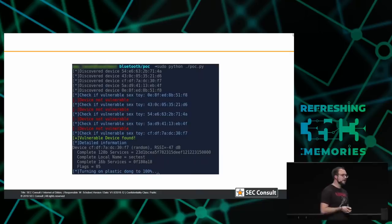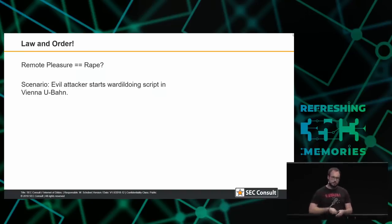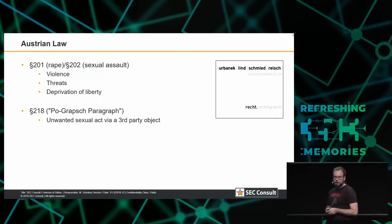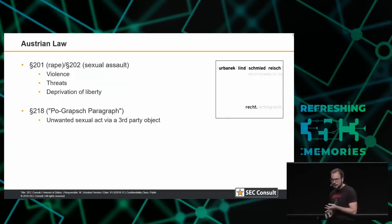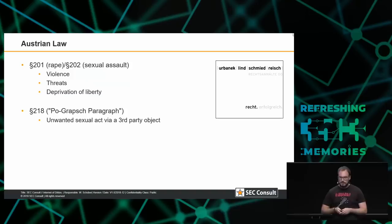The next thing I want to talk about is not that funny. When we released this, a lot of people on Twitter asked: is this rape? It's a serious topic. For example, an attacker using my war-dildering script in the metro in Vienna would pleasure random strangers — is that rape? In Austria we have rape and sexual assault, both requiring preconditions: violence, threat, or deprivation of liberty, which is not the case here. But there is a special paragraph called the Pograbsparagraph — verified with a legal expert — according to which this would be an unwanted sexual act via third-party object. So it's not rape, but it is an unwanted sexual act.